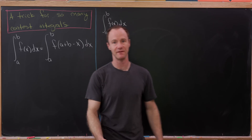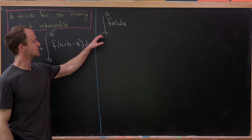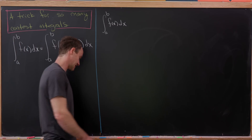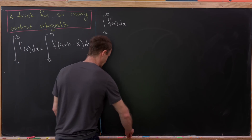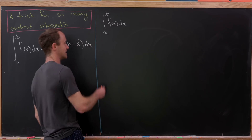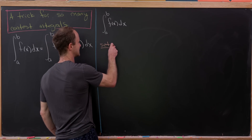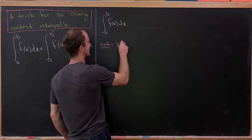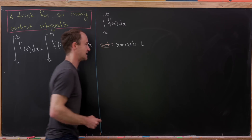Let's derive this trick quickly, and then we'll look at a couple of applications. We're starting with the integral from a to b of f(x) dx, and now let's make a substitution. It's really spelled out in the statement of the trick — let's set x = a + b − t.